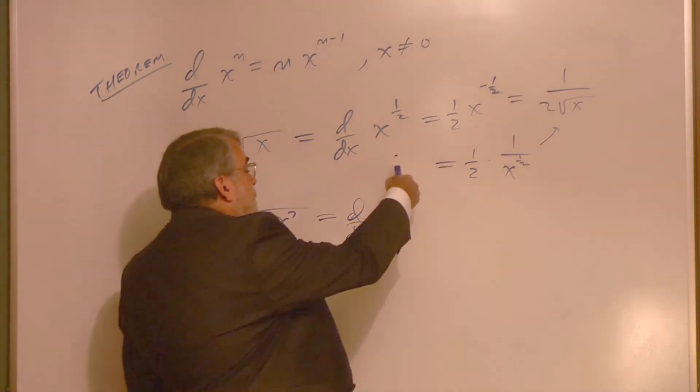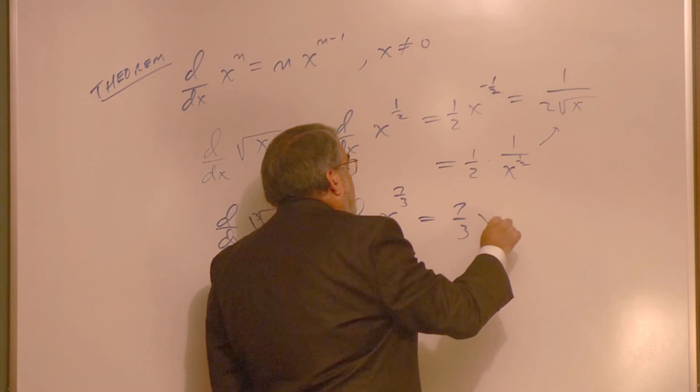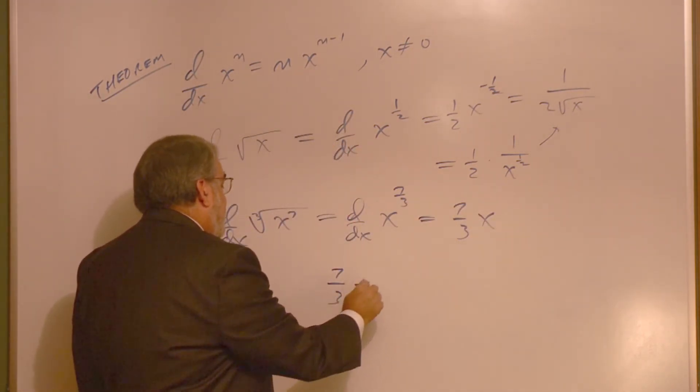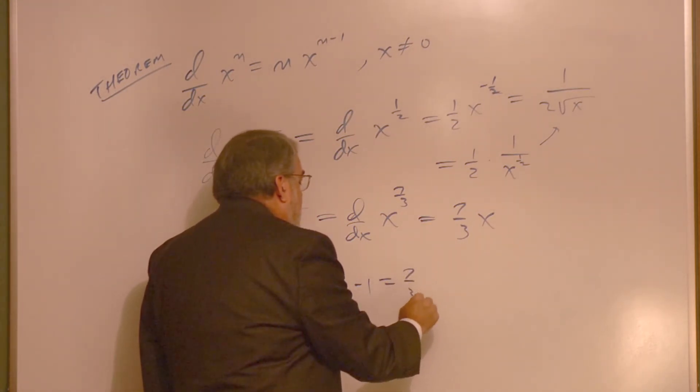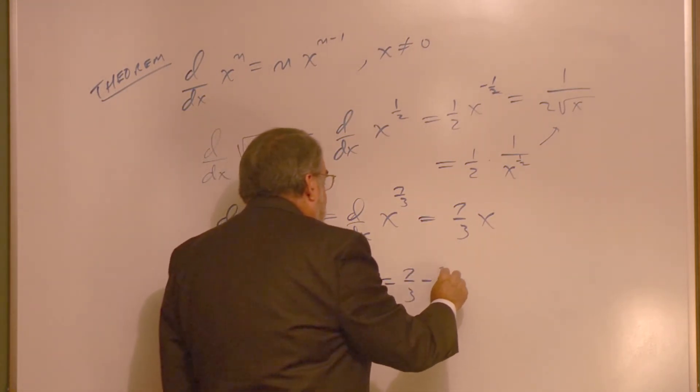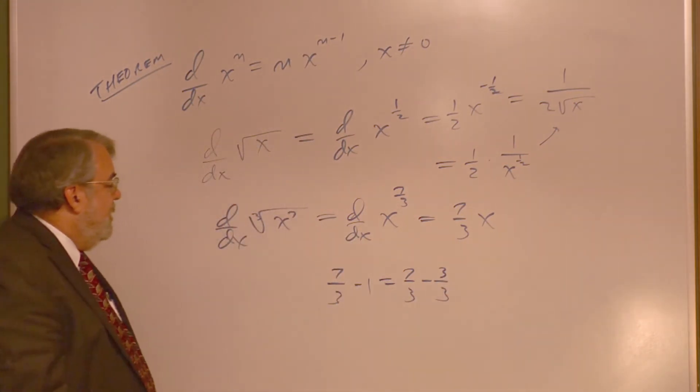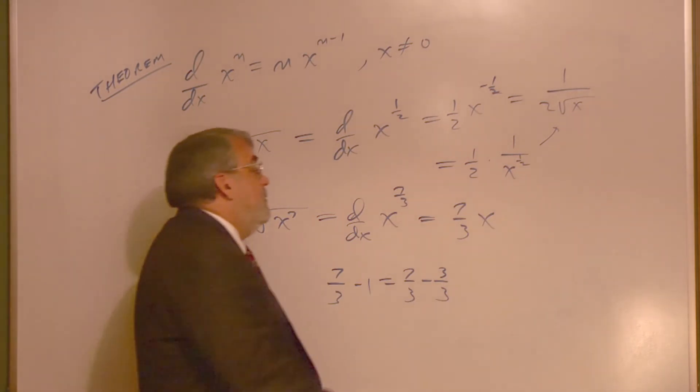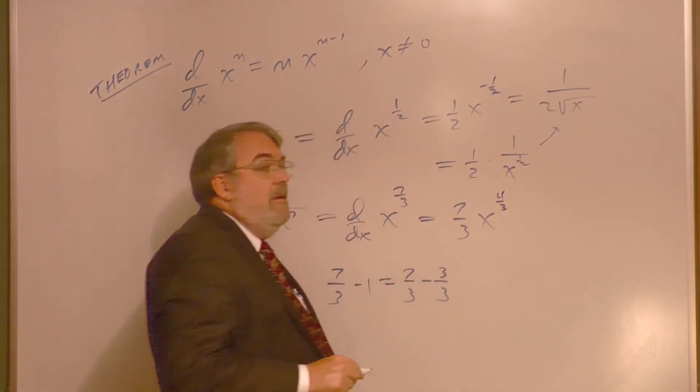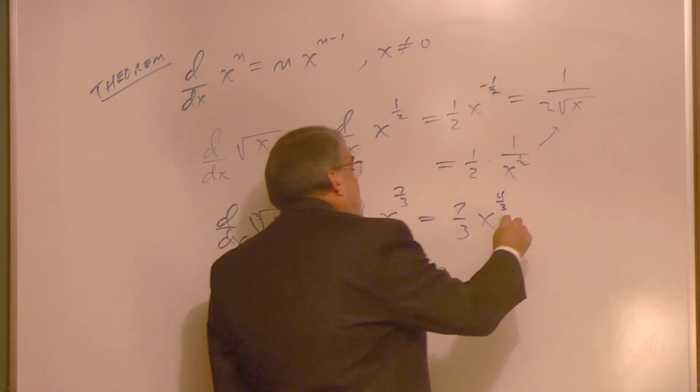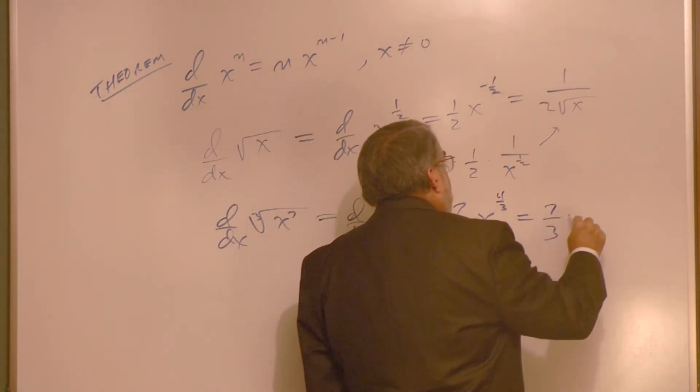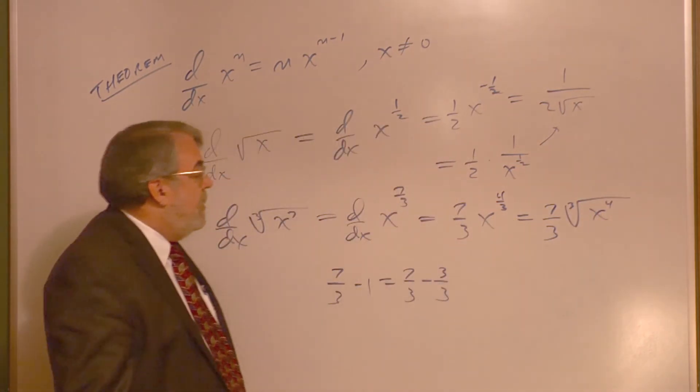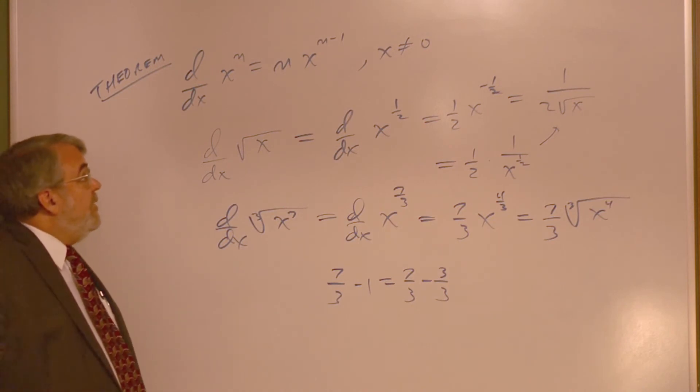So what's that derivative? 7 thirds times x to the 7 thirds minus 1. And I think you'll get good at this arithmetic. When we subtract, we have to get common denominators. So 1 becomes 3 over 3. 7 minus 3 is 4, so it's 4 thirds. Which now becomes 7 thirds times the cube root of x to the 4th power.